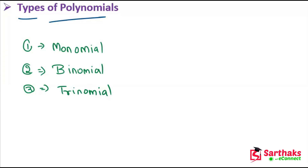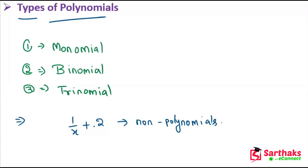First, let's see examples of non-polynomials. For example, 1 divided by x plus 2 is a non-polynomial. Also, x raised to the power of minus 1, which equals 1 over x, is also a non-polynomial. A polynomial is never divided by a variable.